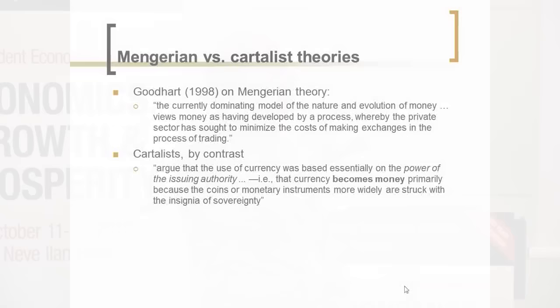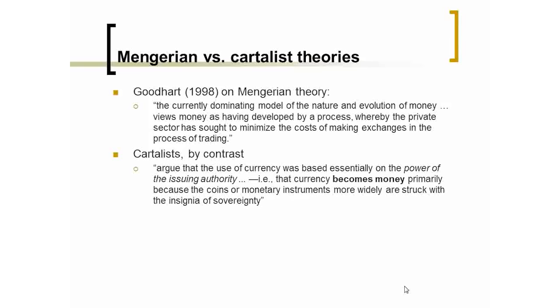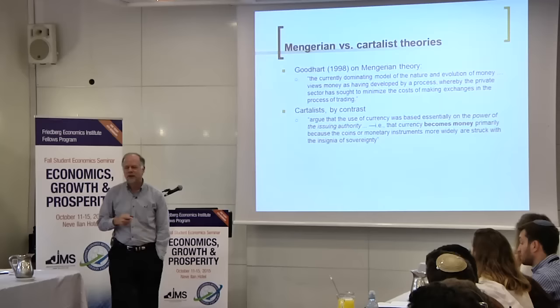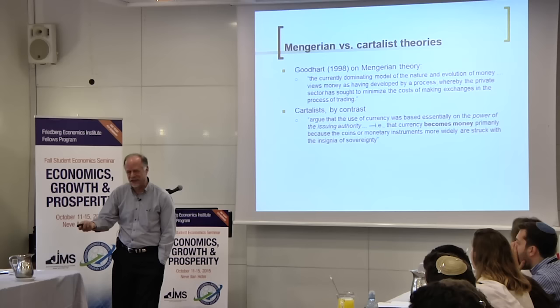Not everybody loves the invisible hand theory. There's a group who still endorse the state theory of money, calling themselves cartalists or chartalists. One of the more respectable economists to enunciate this is Charles Goodhart, who draws the contrast: Mengerians emphasize the private sector seeking to minimize the cost of making exchanges, whereas cartalists argue that the use of currency was based essentially on the power of the issuing authority — currency becomes money primarily because coins are struck with the insignia of sovereignty. This seems to me to be putting the cart before the horse.